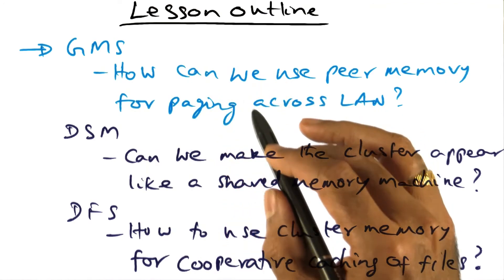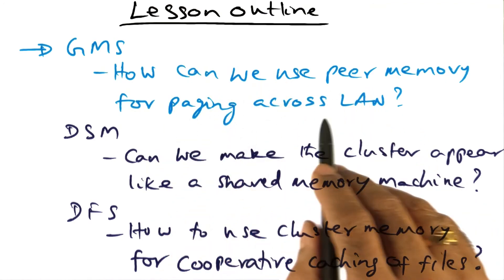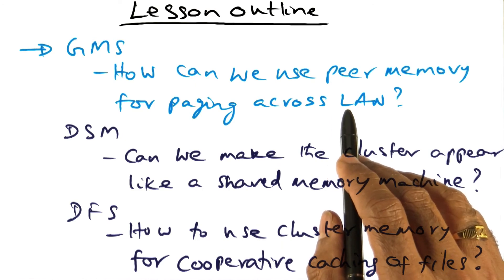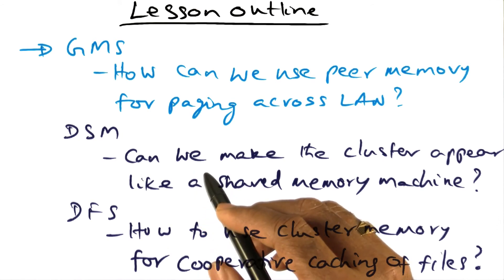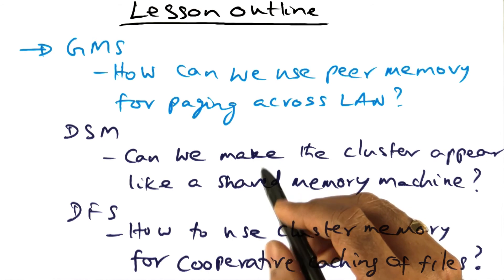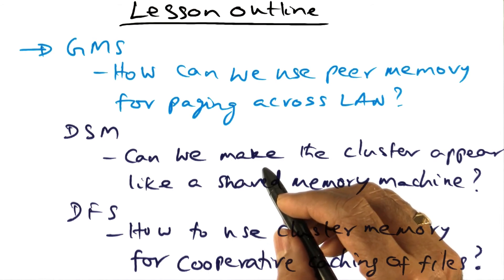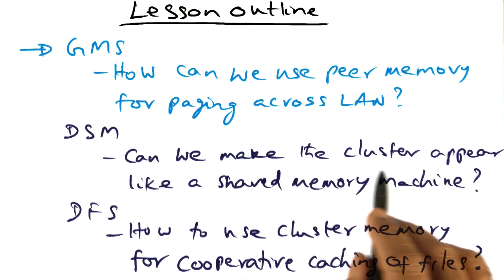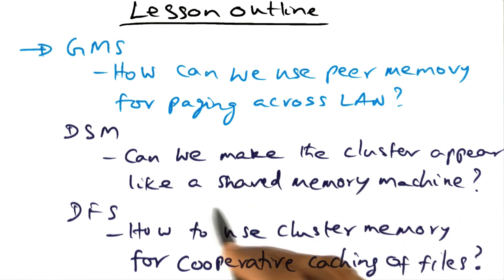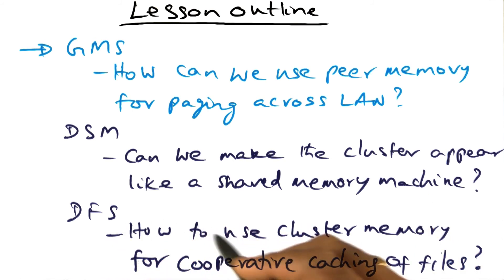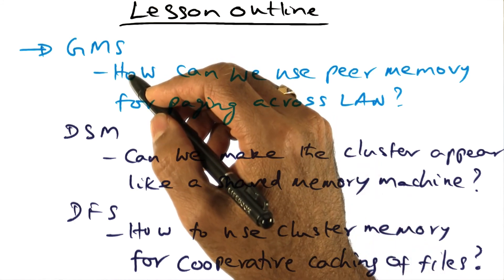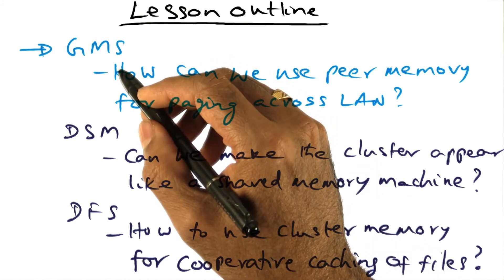The Global Memory System, GMS, asks the question: how can we use the peer memory for paging across the local area network? Later on, we will see DSM, which stands for Distributed Shared Memory, which asks: if shared memory makes the life of application programmers simple in a multiprocessor, can we try to provide the same abstraction in a cluster and make the cluster appear like a shared memory machine? The third work we will see is distributed file system, which asks: can we use the cluster memory for cooperative caching of files? With that, back to our first part of this three-part lesson module, namely the Global Memory System.